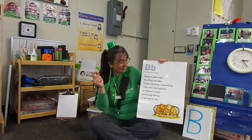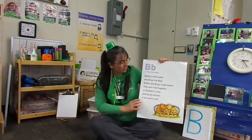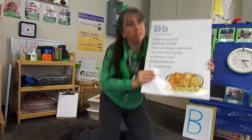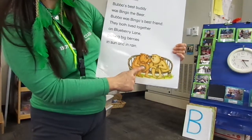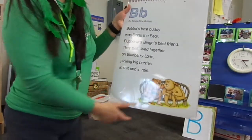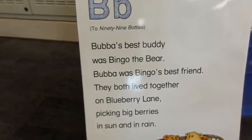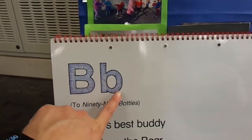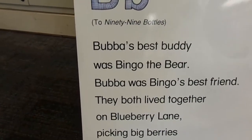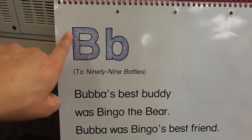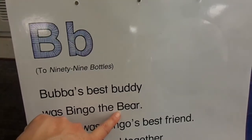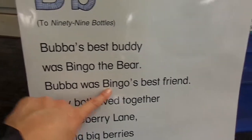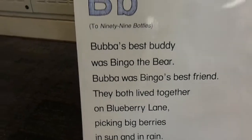Wow, that was a fast one. So it's about Bubba. Let me get closer. I guess it's about these two guys — they're best friends. They both live together on Blueberry Lane. There's the blueberries. And in sun and in rain. Let's look for some Bs in here. The one that we know has a big line down, small curve at the top, small curve at the bottom. There's one there. Do you see another one? One here, one there. There's one here and there, and right there. That's a lot. There are some lowercase ones too.